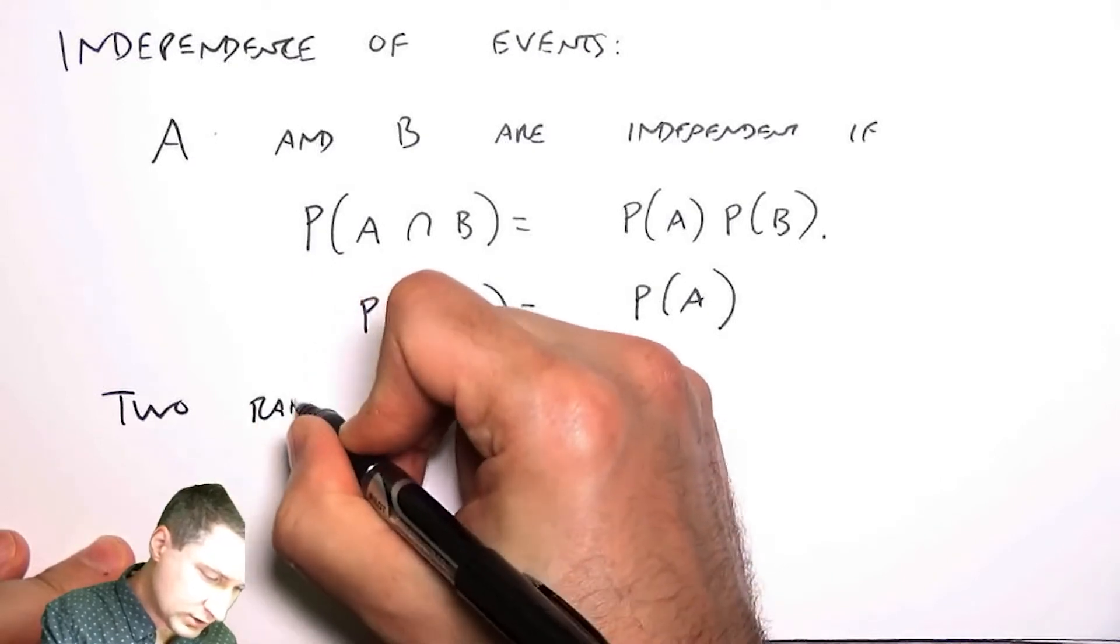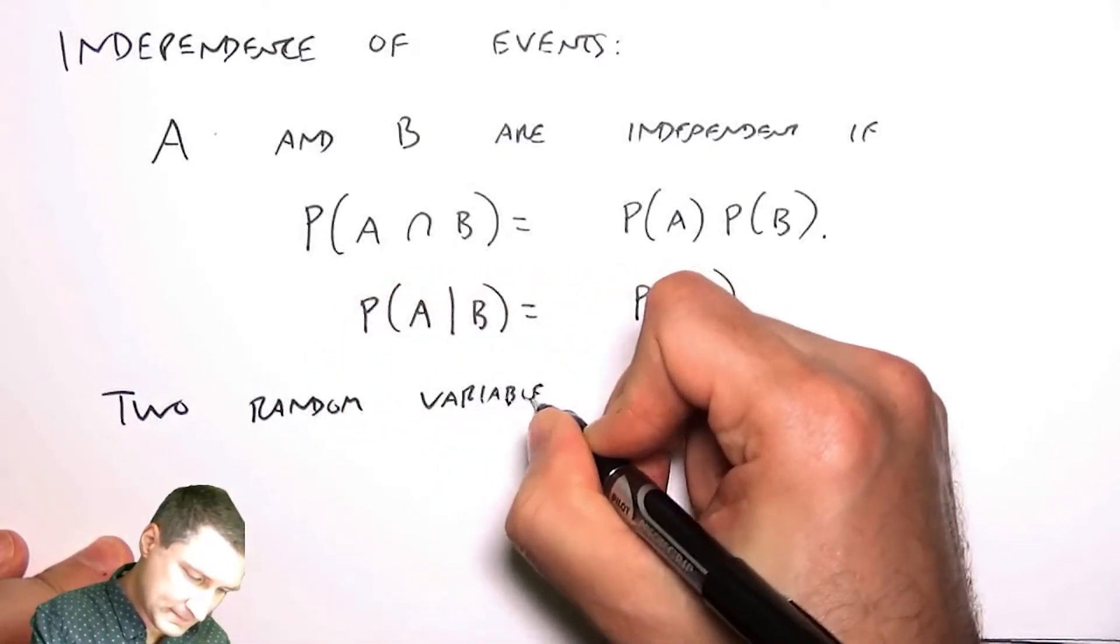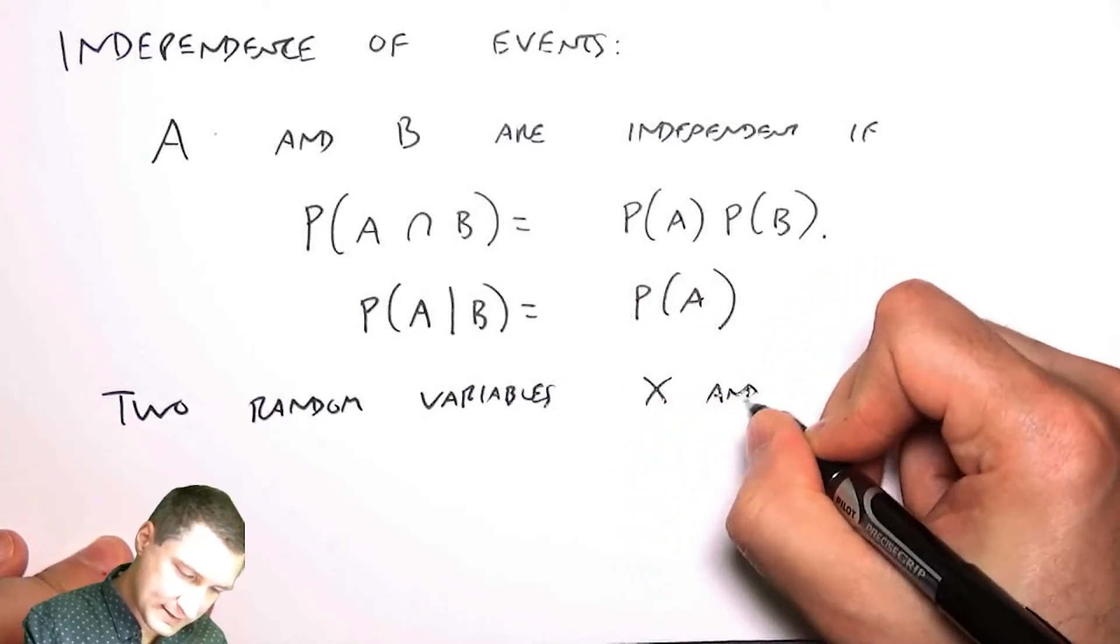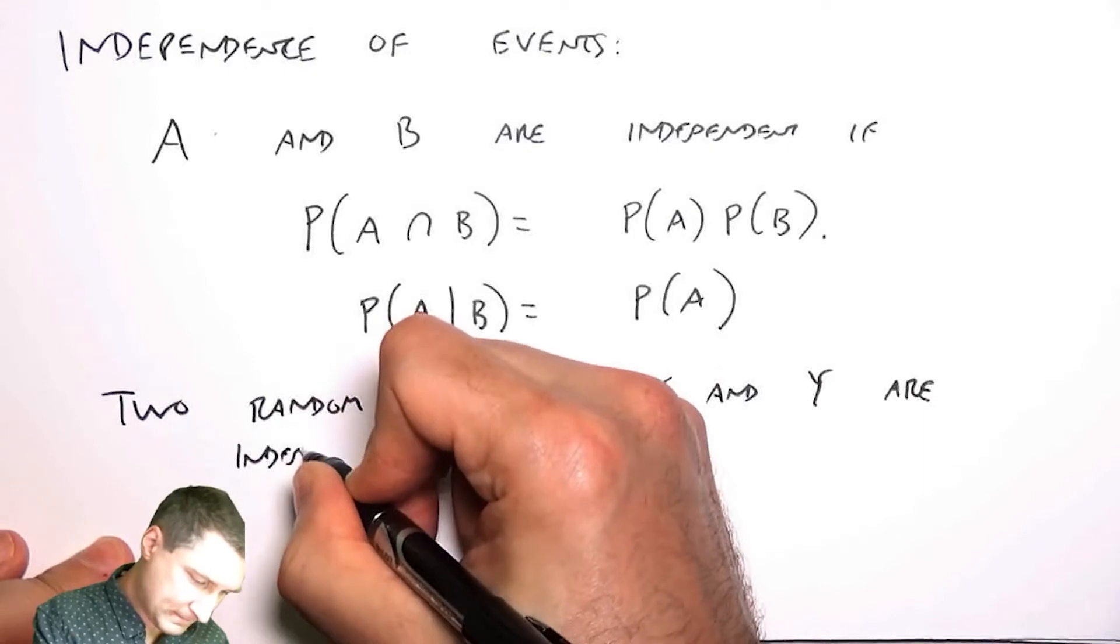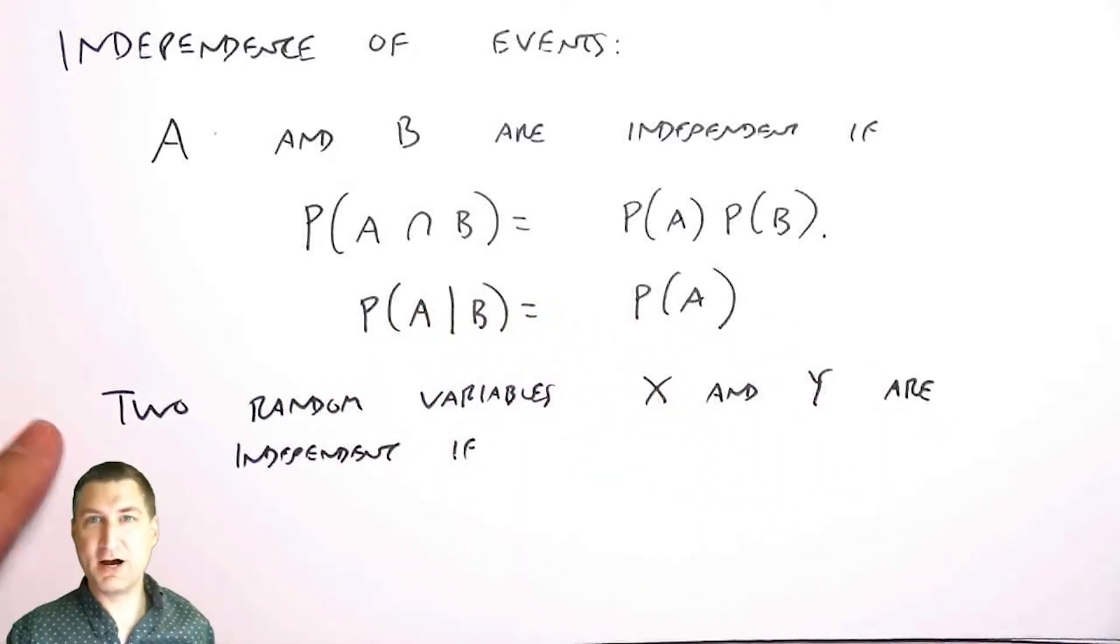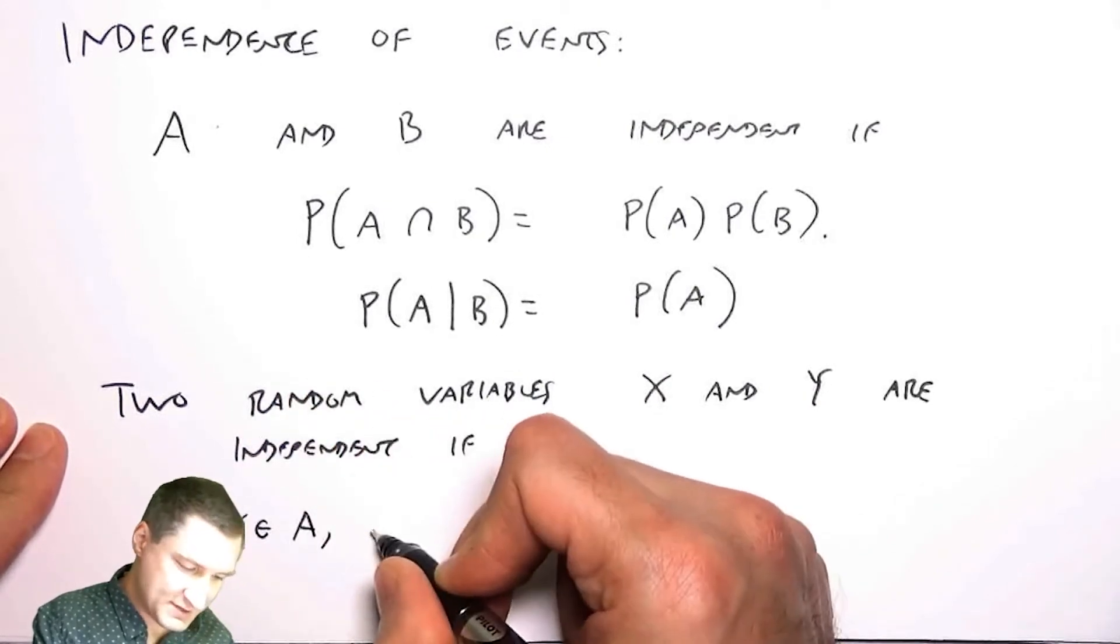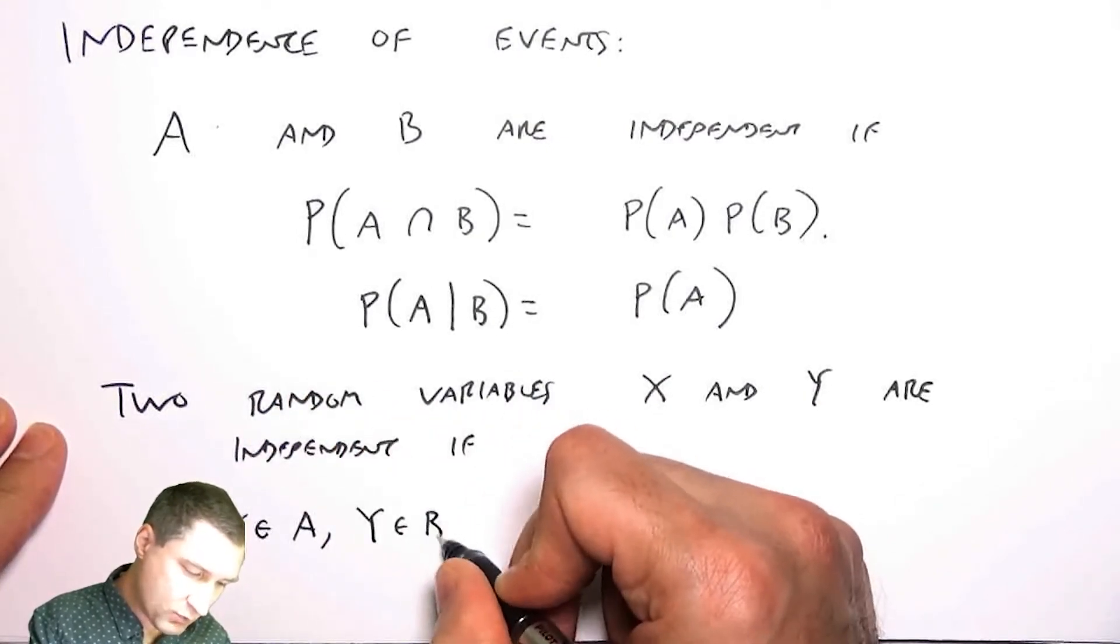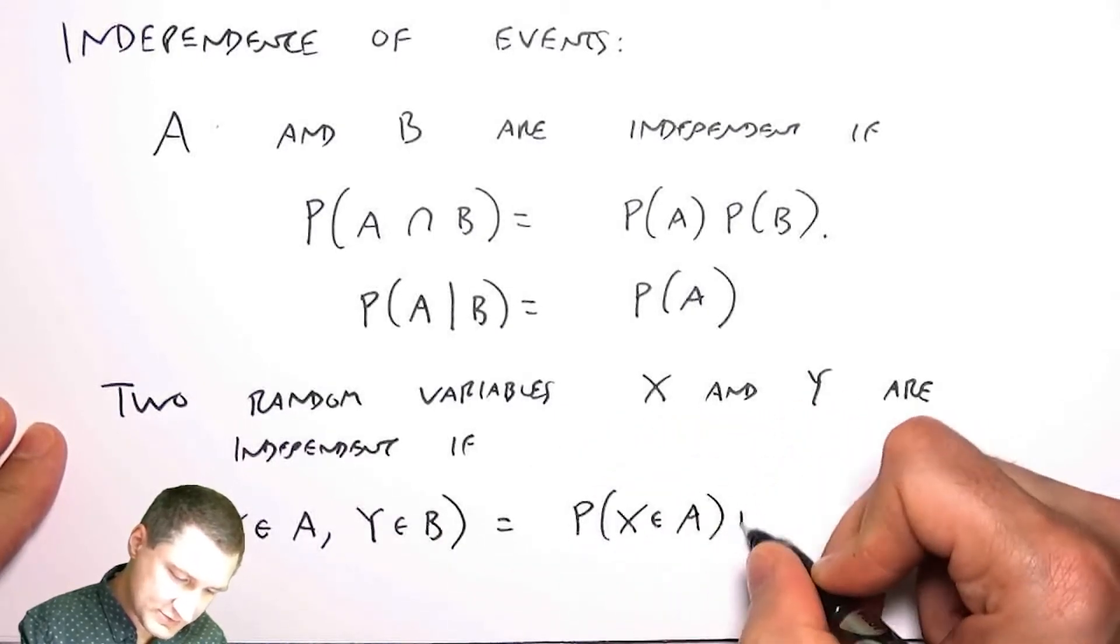X and Y are independent if basically the product, or the probability of X being in event A and Y being in event B, is simply the product of these two probabilities